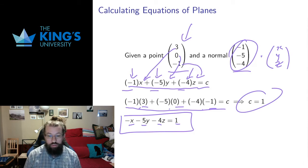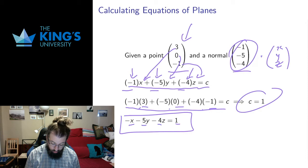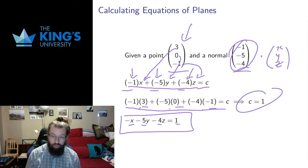I already had the constants negative one, negative five, and negative four up there, and now I have the constant one. X, y, and z are my variables, so I leave them alone. So the plane that goes to the point (3, 0, 1), and has the normal (-1, -5, -4), is the plane with this equation.